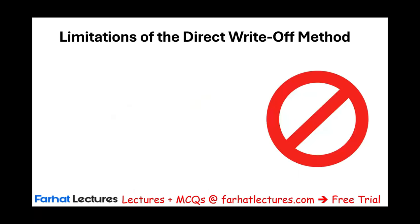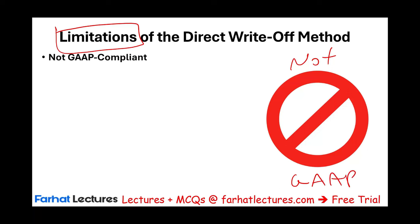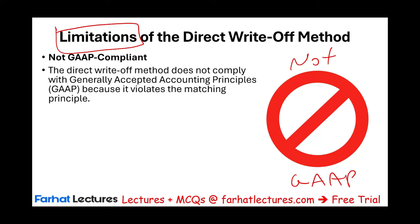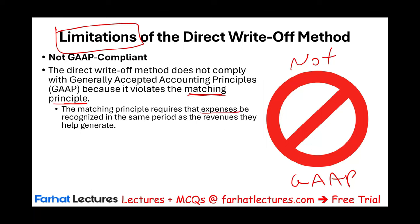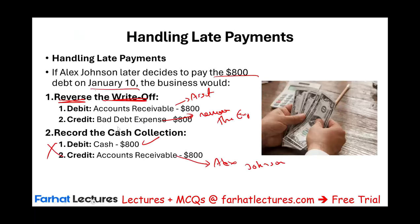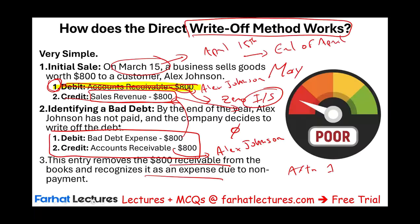What are the limitations of the direct write-off method? The direct write-off method is not GAAP — not generally accepted accounting. We're learning it because it helps us understand the allowance method. It does not comply with GAAP because of the matching principle, which requires that expenses be recognized in the same period as the revenues they help generate.